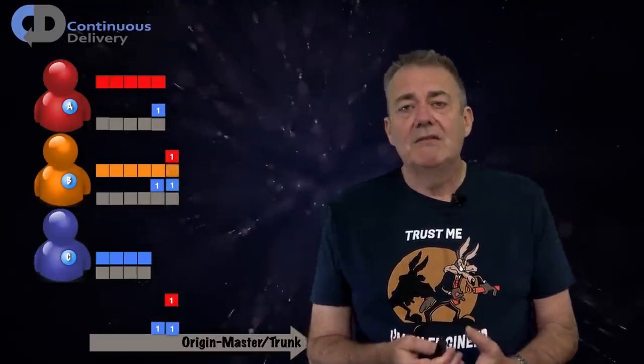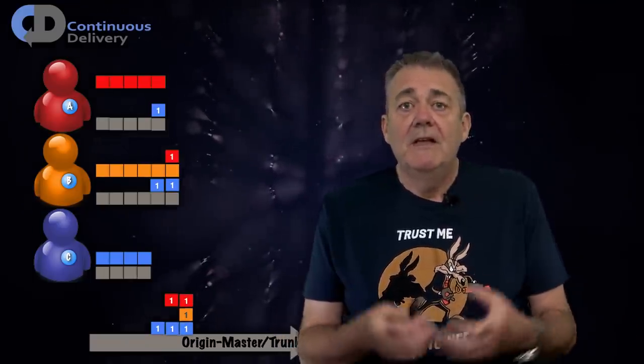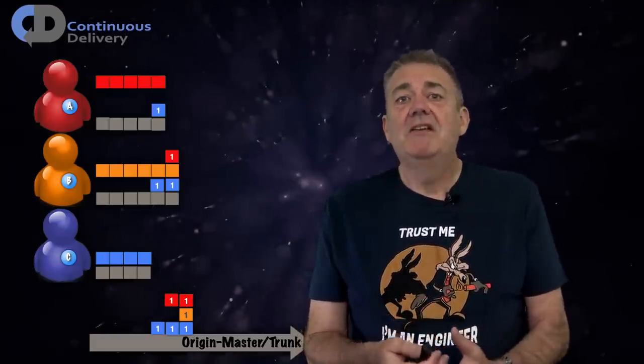C never even knew about A and B. B sees C's changes but not A's. A sees C's changes but not B's. Next, A pushes their finished feature. Now you may have noticed that I haven't said anything about time scale here. This is always true—feature branching or continuous integration. Until you integrate your changes, you can't be sure that they will work.